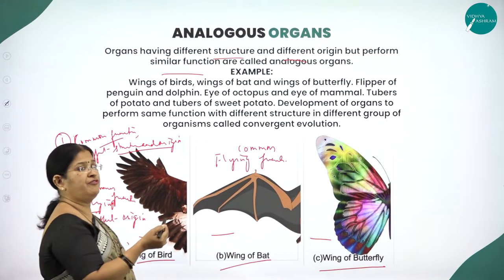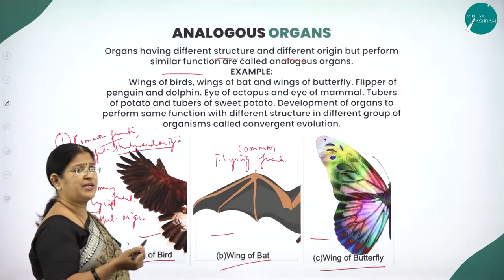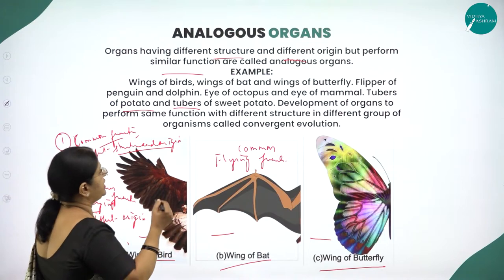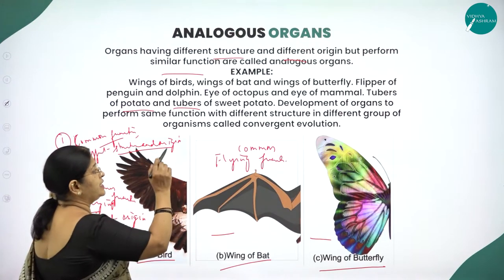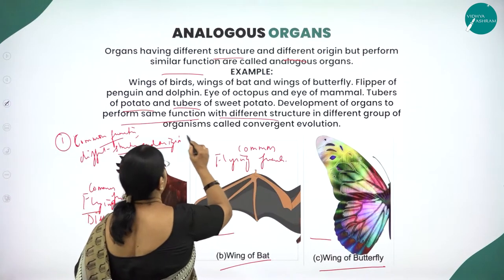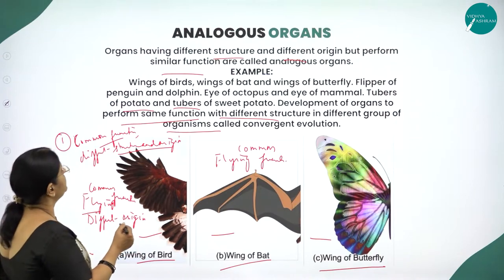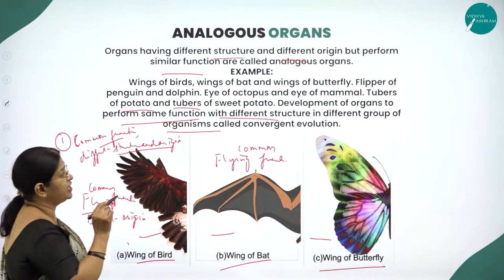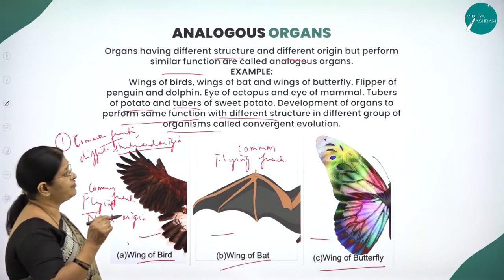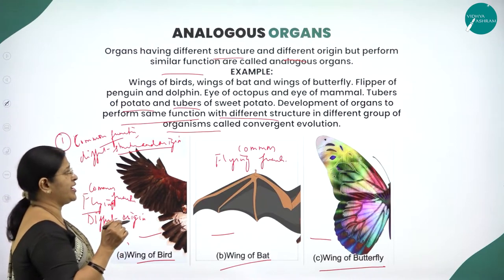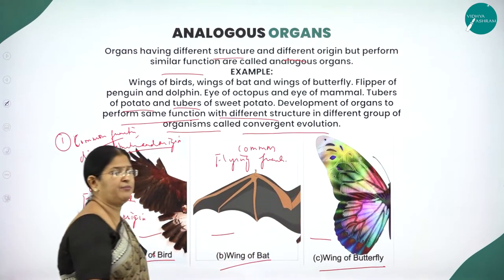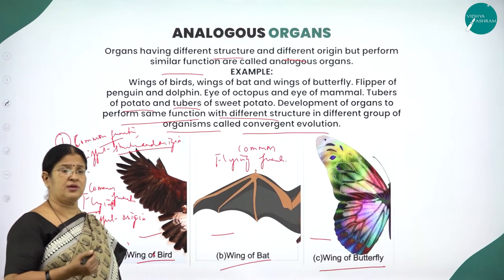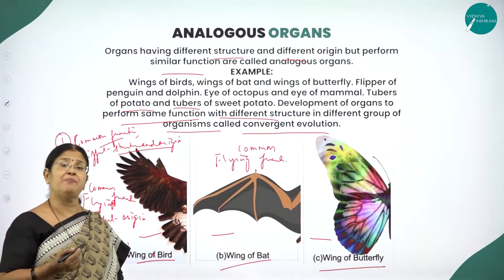You can also take the flipper of penguin and dolphin used for swimming, the eye of octopus and eye of mammal for vision, and tubers of potato and sweet potato for vegetative propagation. Development of organs to perform the same function with a different structure in different groups of organisms is called convergent evolution. This is a very important point from an examination point of view, and homologous and analogous organs are also very important questions in practicals.